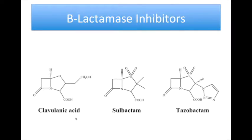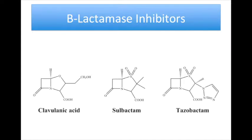Beta-lactamase inhibitors include clavulanic acid, sulbactam, and tazobactam. These substances resemble the beta-lactam molecules, but they have very weak antibacterial action. However, they are potent inhibitors of many but not all bacterial beta-lactamases, and they can protect hydrolyzable penicillins from inactivation by these enzymes. Beta-lactamase inhibitors are available only in fixed combinations with specific penicillins. The antibacterial spectrum of the combination is determined by the companion penicillin. An inhibitor extends the spectrum of a penicillin provided that the inactivity is due to destruction by beta-lactamase and that the inhibitor is active against the beta-lactamase produced.